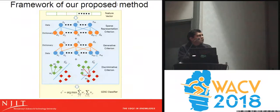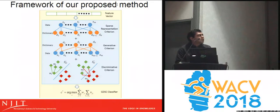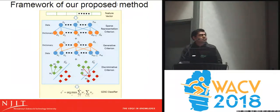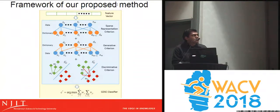Here is a diagram of the framework. We have the input feature vector and three criteria in our objective function. The first is the traditional sparse representation criterion. Then we have a generative criterion where every dictionary item is represented as a linear combination of the training samples. Finally, we have our discriminative criterion using new localized within-class and between-class scatter matrices for discriminant analysis. The formula for the classifier is also shown.